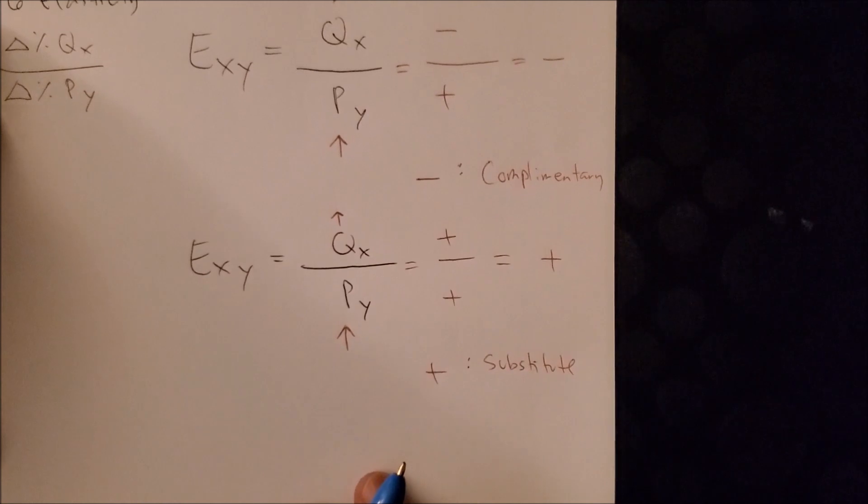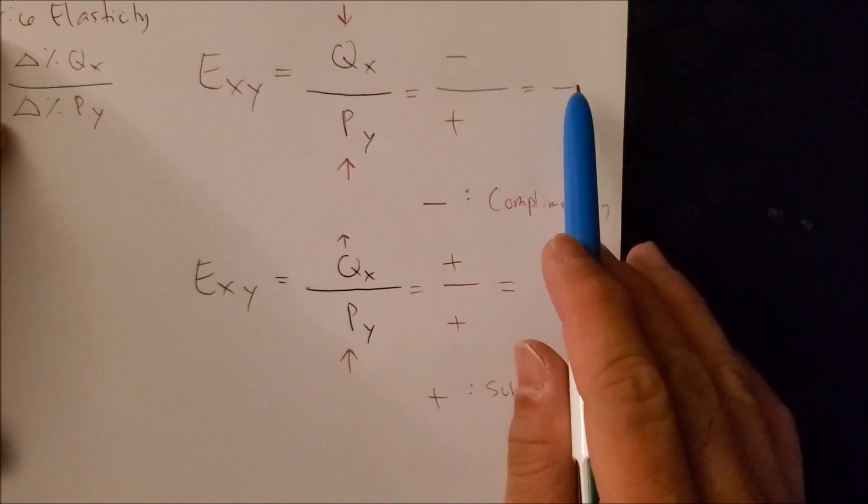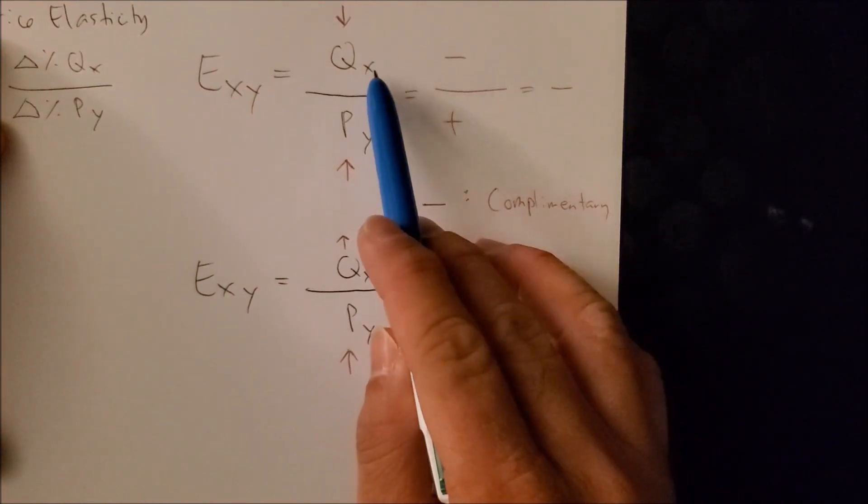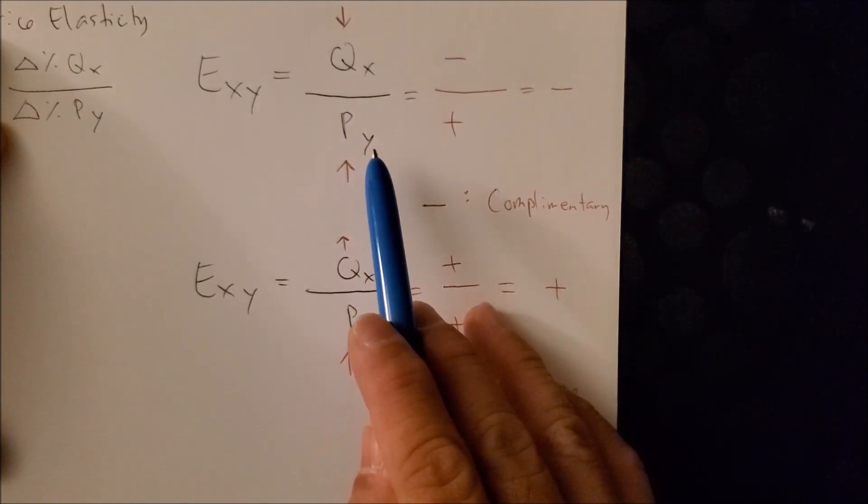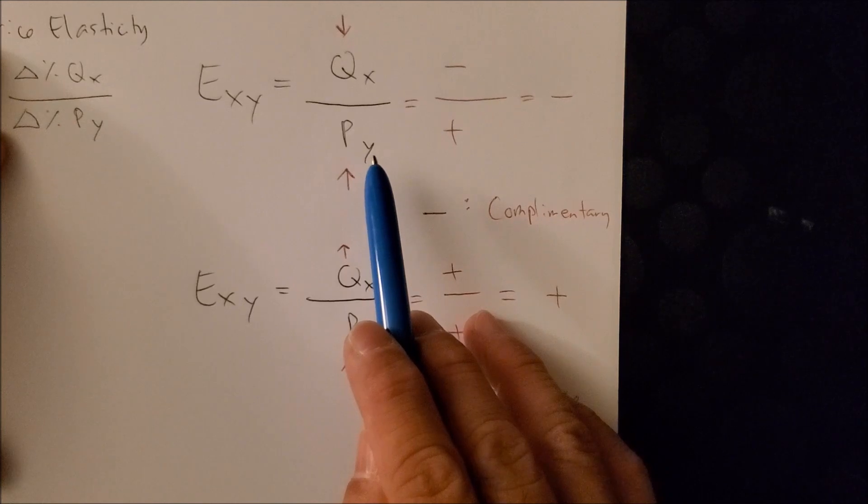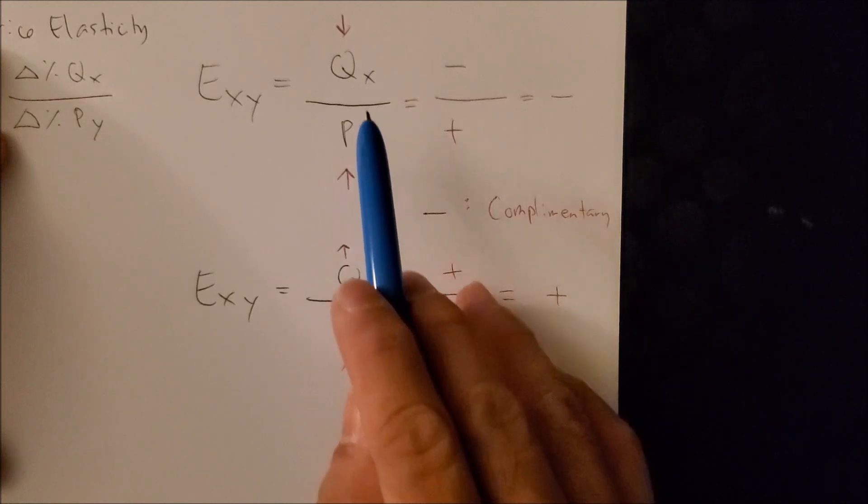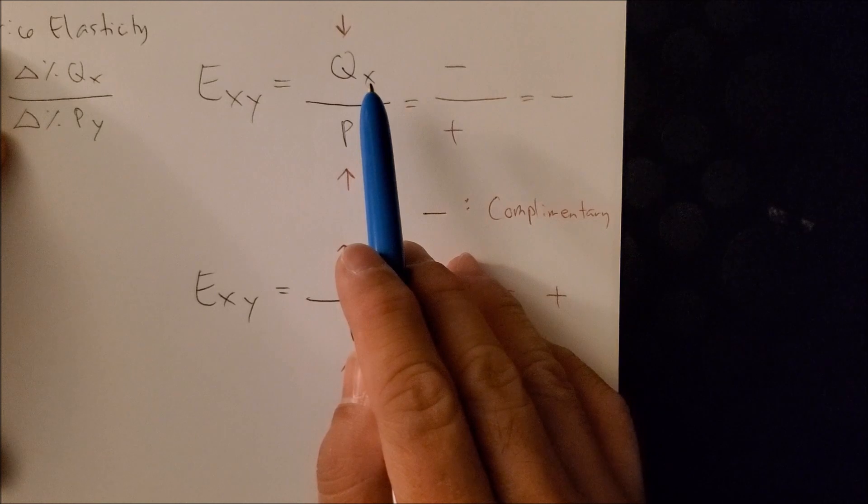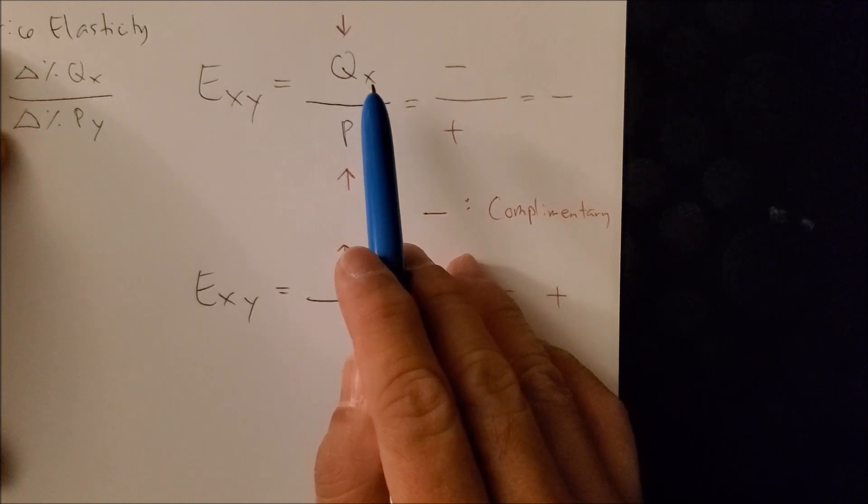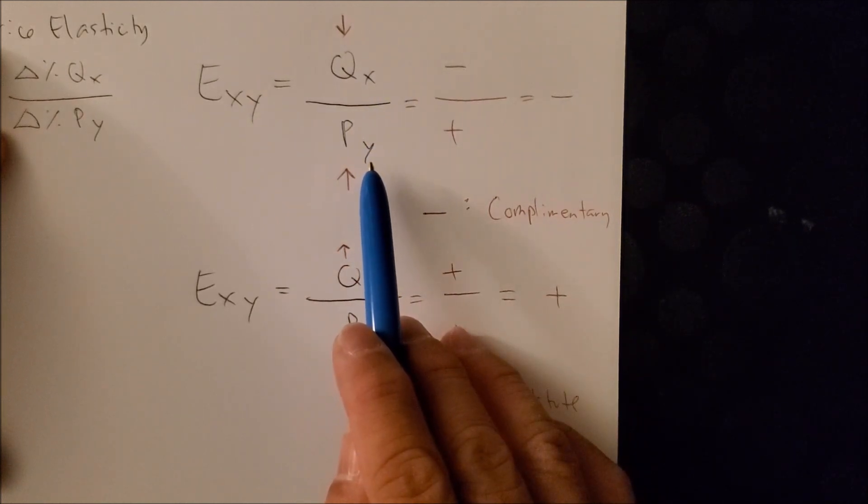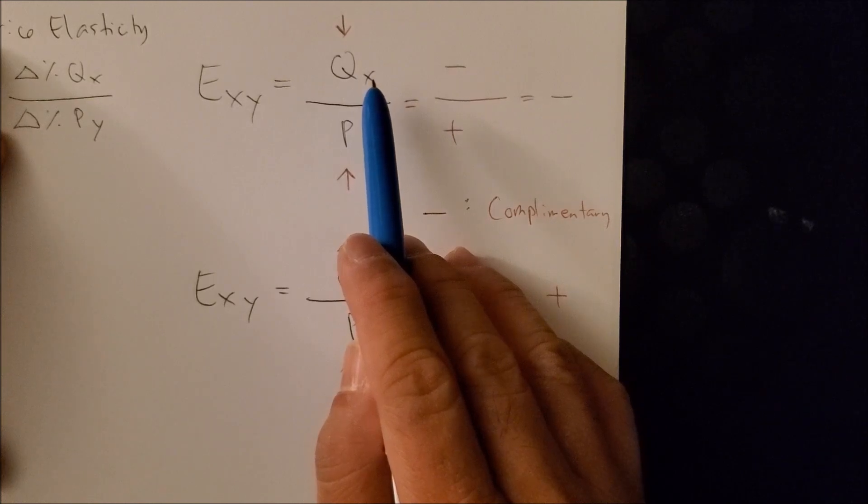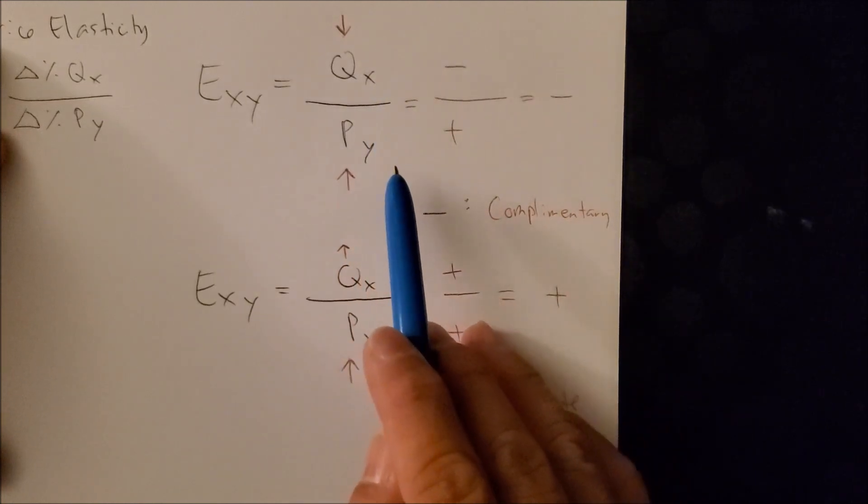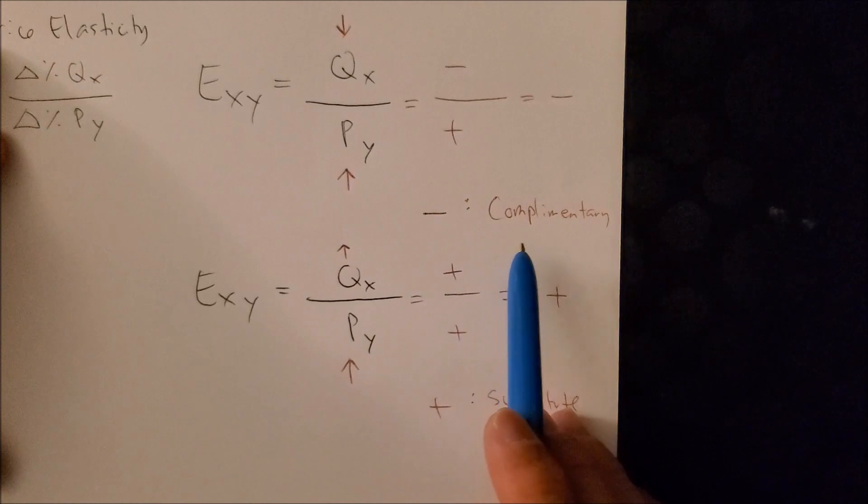Back to our example of a negative value. Let's say, for example, that good X represents donuts, good Y represents coffee. If the price of coffee increases, you are going to consume less donuts. So think about that. Price of coffee now is more expensive. Why would you want to buy donuts? It's no longer appealing as it was before. Hence, donuts and coffee are both complementary goods.